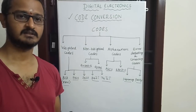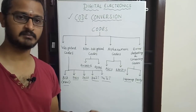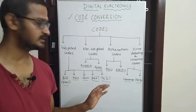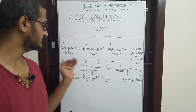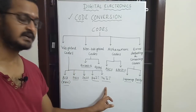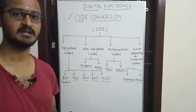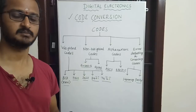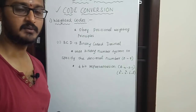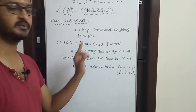First, what are weighted codes? Weighted codes obey positional weighting principles. There are 4 bits, each with a specific weight. The weights depend on the weighting code applied.